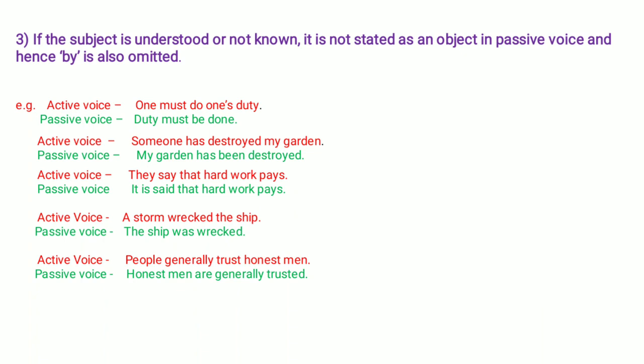Second example: 'Someone has destroyed my garden.' We don't know who destroyed it. We take the object first: 'My garden has been destroyed.' There is no need to write 'by someone' — it is omitted.